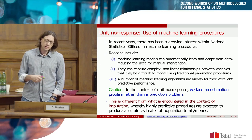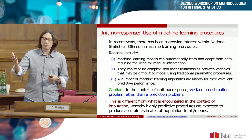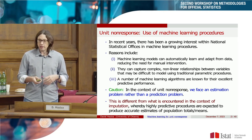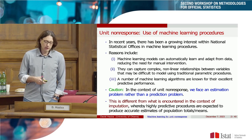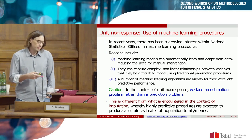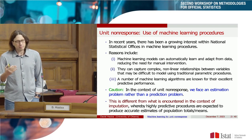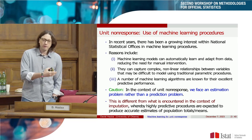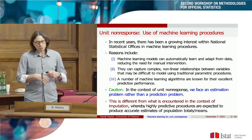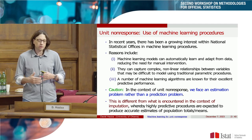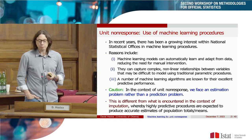There is a growing interest for machine learning everywhere. At Statistics Canada, when people treat unit non-response they usually use the score method — what Changbao called post-stratification or weighting cells. Now people want to use boosting and random forest for unit non-response. The reason often given is that machine learning reduces the need for manual intervention — but is it really the case? Machine learning captures complex non-linear relationships, providing robustness compared to traditional parametric models and very good predictive performance.